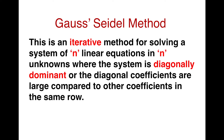Gauss-Seidel method is an iterative method which is applicable only for diagonally dominant systems. By diagonally dominant we mean that the diagonal coefficients of the system are large compared to the other coefficients in the same row. If this condition is not satisfied, Gauss-Seidel method will not converge and you will not get a solution for the system.